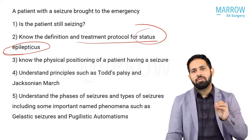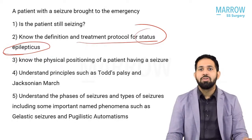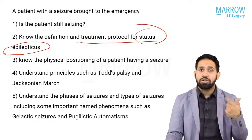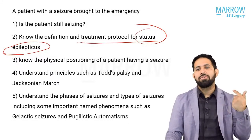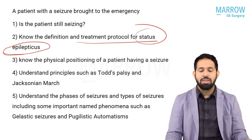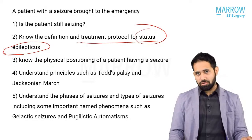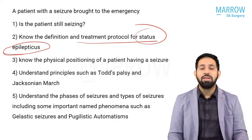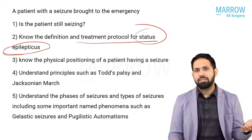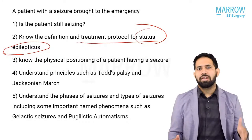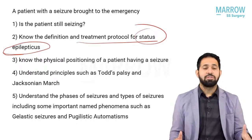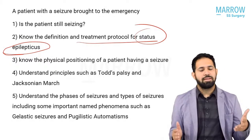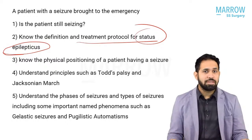Second-line treatment: if the seizure doesn't stop with the first agent, switch to another — if phenytoin was given, give levetiracetam; if levetiracetam was given, give fosphenytoin. Third-line is to sedate and ventilate. Practically, in a good center, if the seizure doesn't stop after one drug and midazolam, you directly intubate the patient to preserve brain function, because seizures lasting more than three to four minutes can cause permanent hypoxia to the brain.